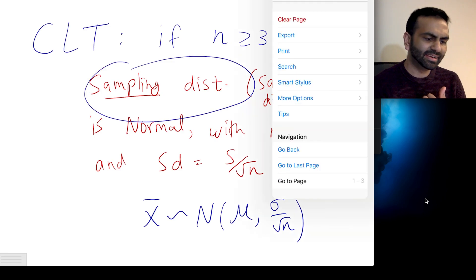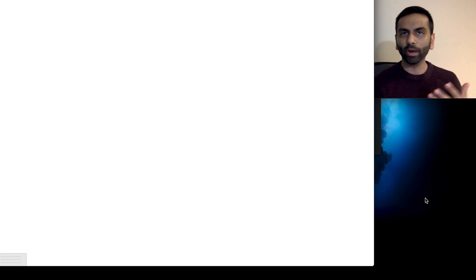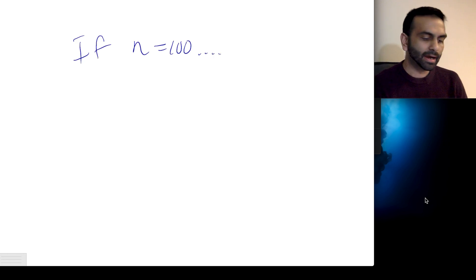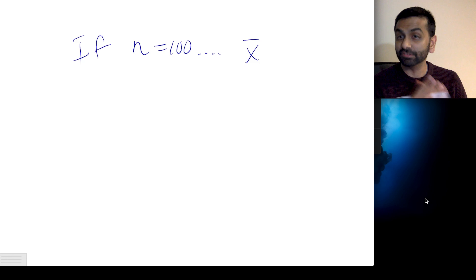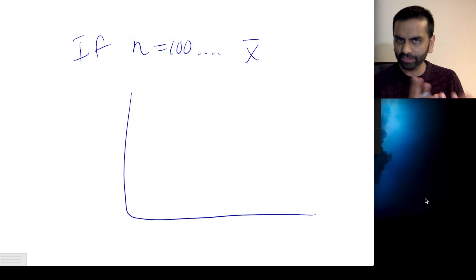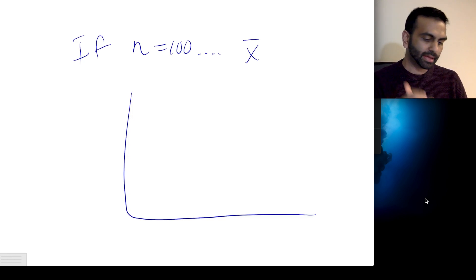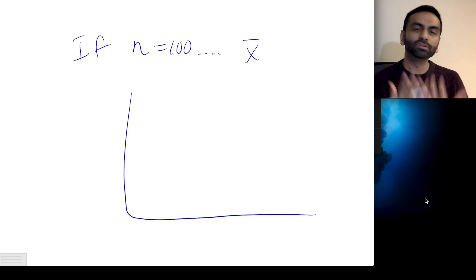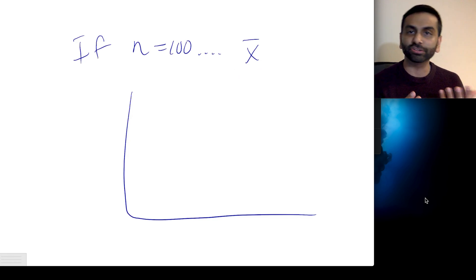What exactly is a sampling distribution? A sampling distribution is basically saying: instead of asking one person at a time what their income is and making a distribution of that, what if we asked 100 people at a time? We average those 100 people and get a value — that's x-bar. The thing is, there are a lot more than 100 people in our population. If you sample a random 100 of them, and then sample another 100, you might get a totally different x-bar. So there exist many different possible x-bars based on which 100 people you picked.